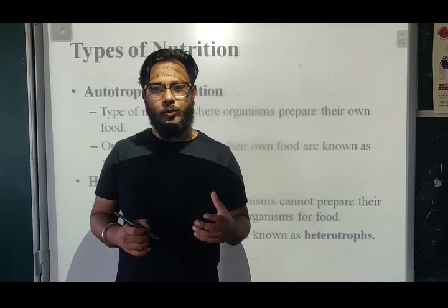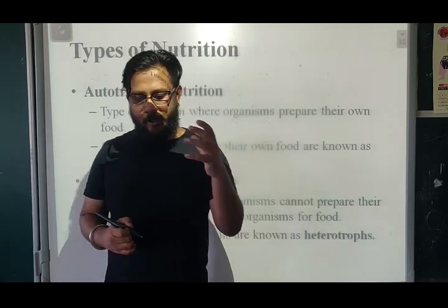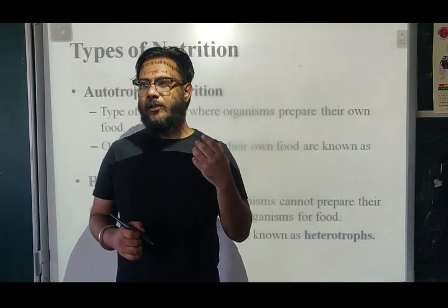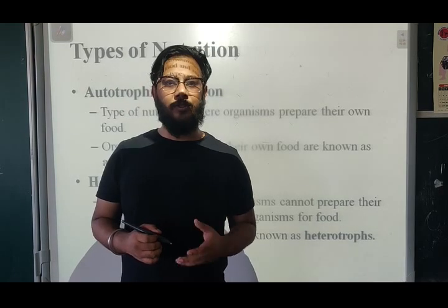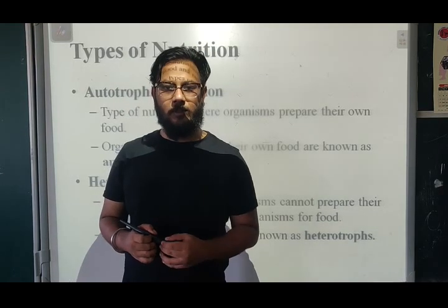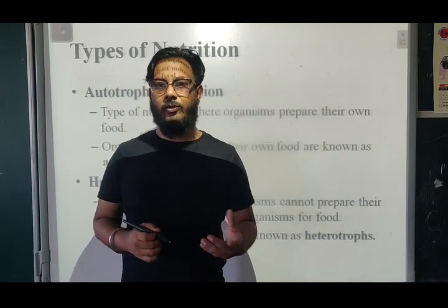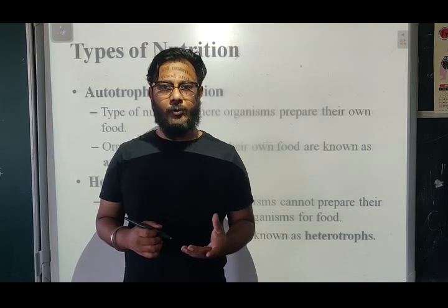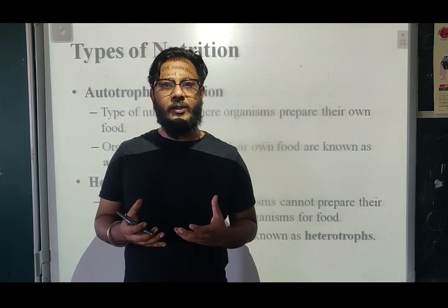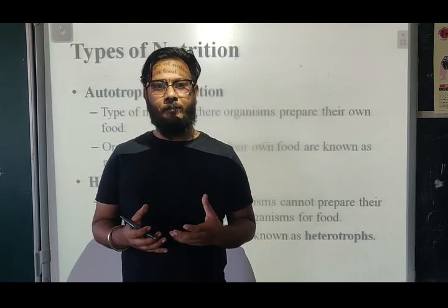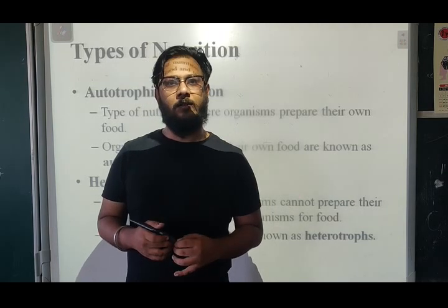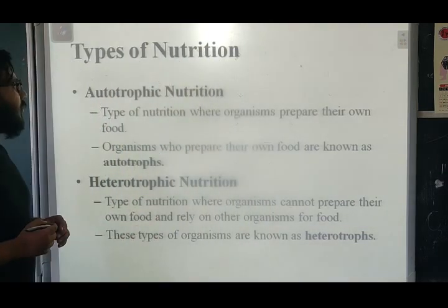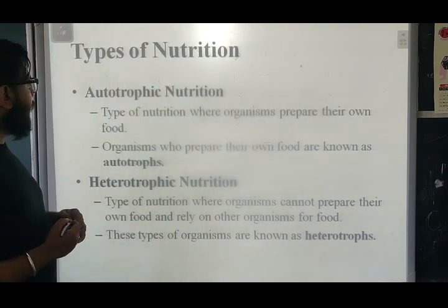Heterotrophs are organisms which rely on autotrophs for food. They don't make their own food in the body. Heterotrophs are basically animals who feed on plants — like us. We feed on plants and rely on them for food. The glucose we need in our body is made by plants.